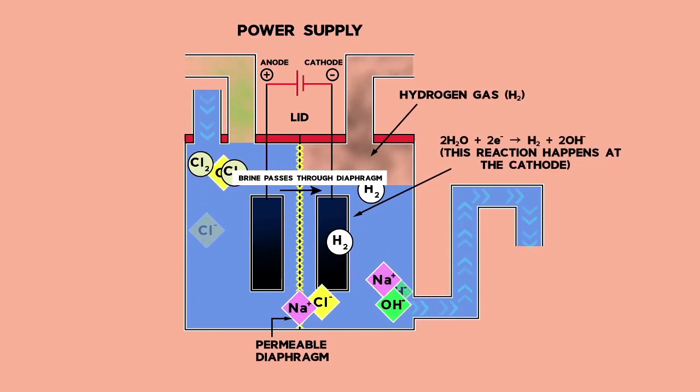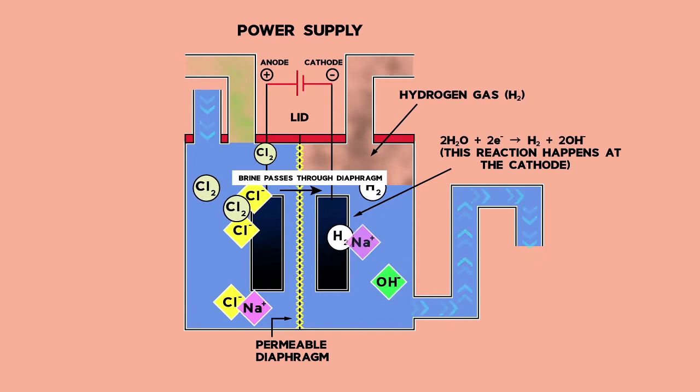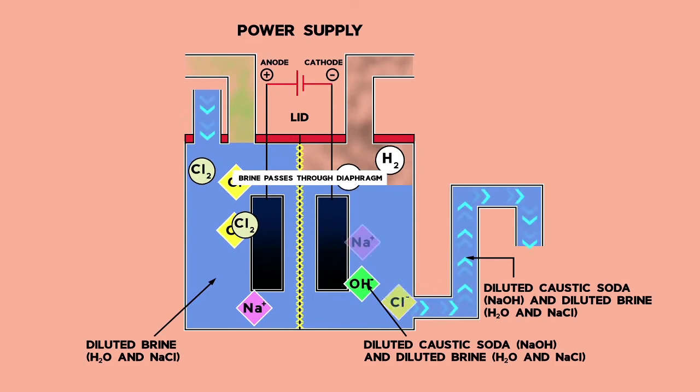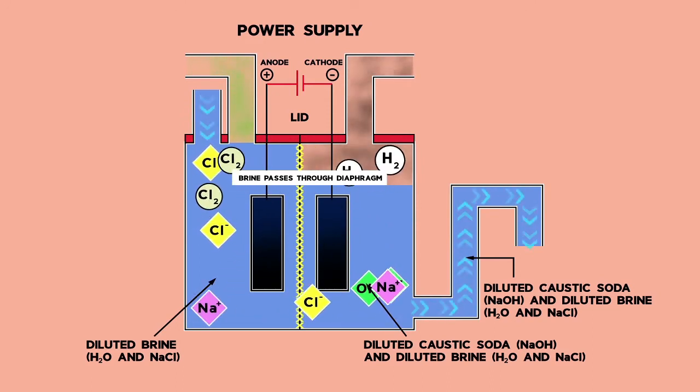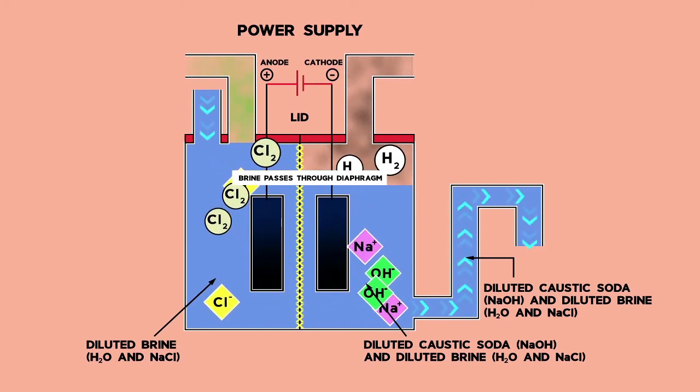The diaphragm in the middle is needed to keep the chlorine separate from the hydrogen made at the cathode. The two make an explosive mixture that is very unstable. After the hydrogen is produced, the sodium hydroxide and leftover salt exit the cell.